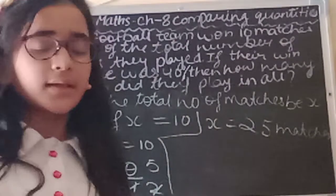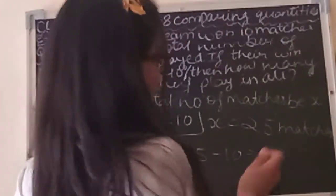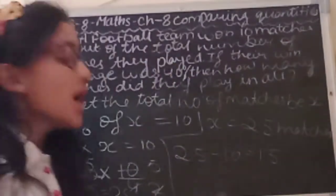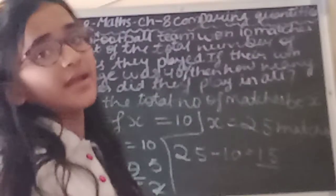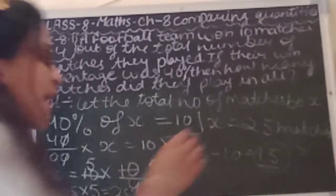So we want to find out how many matches they lost. We will do 25 minus 10. 25 minus 10 is 15. 15 matches they lost.